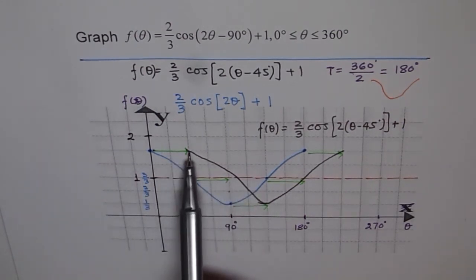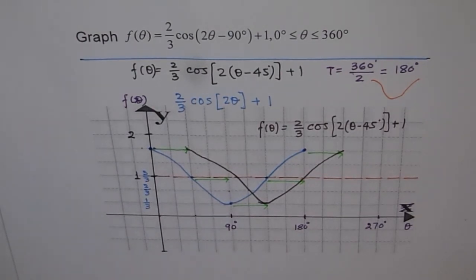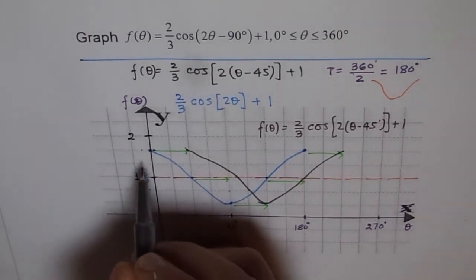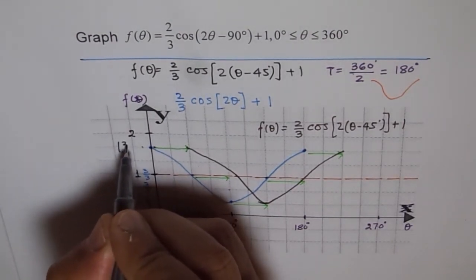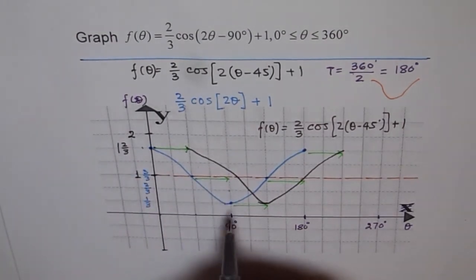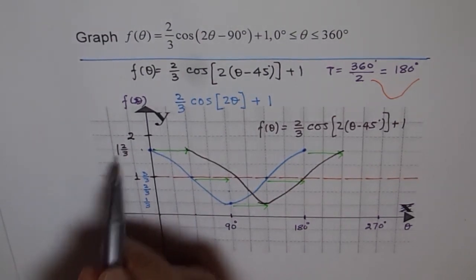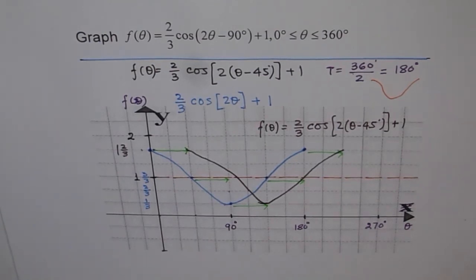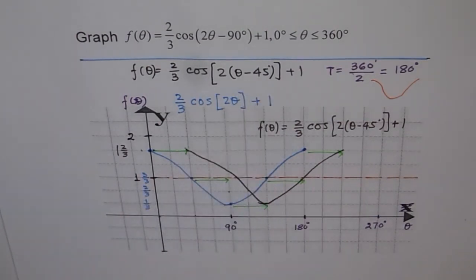The range is from this value to that value, which is 1, 1 over 3, 2 over 3. This maximum value is at 1 and 2 over 3, and the minimum value is 1 over 3. So the range is from 1 over 3 to 1 and 2 over 3. The time period is 180 degrees. Phase shift is 45 degrees to the right.